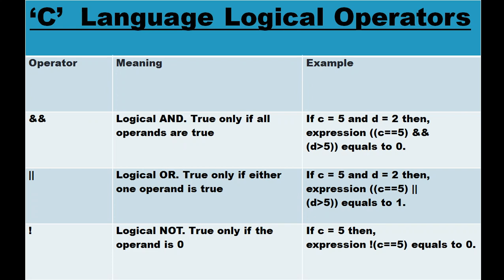Logical OR (||): true only if either one operand is true. If c equals 5 and d equals 2, the expression (c == 5) || (d > 5) — c == 5 is true, d > 5 is false, but since at least one operand is true, it will give the answer true, or one.